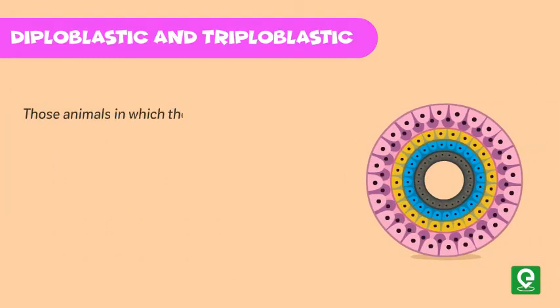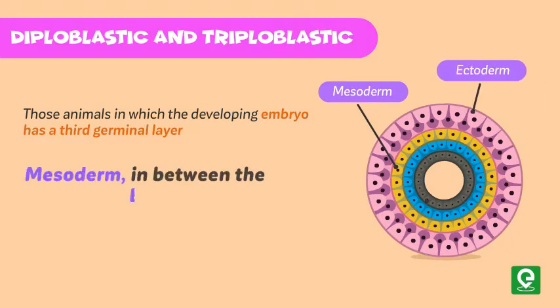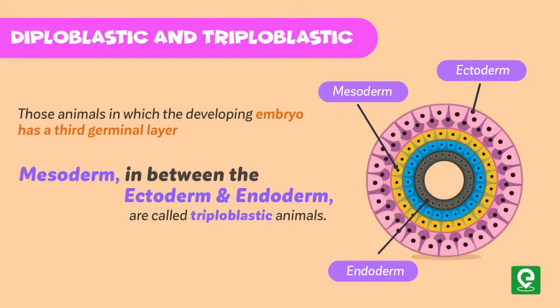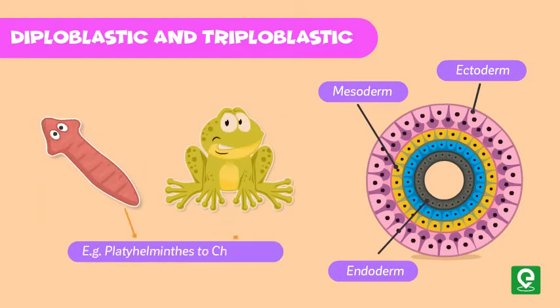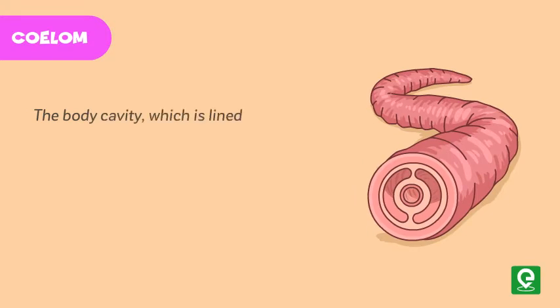Those animals in which the developing embryo has a third germinal layer, mesoderm, in between the ectoderm and endoderm are called triploblastic animals. For example, platyhelminthes to chordates.